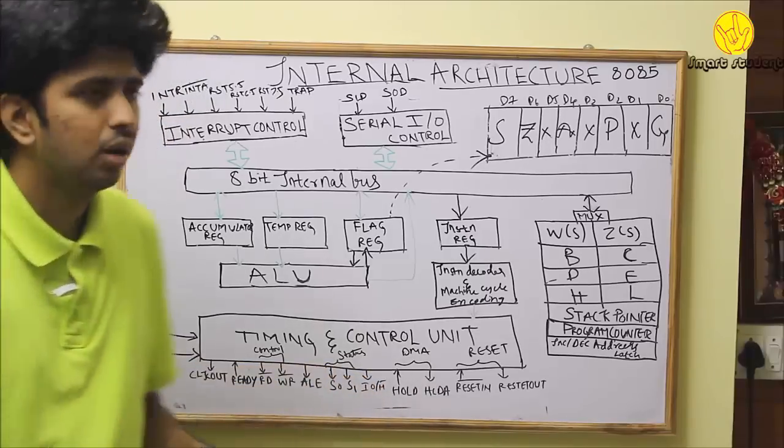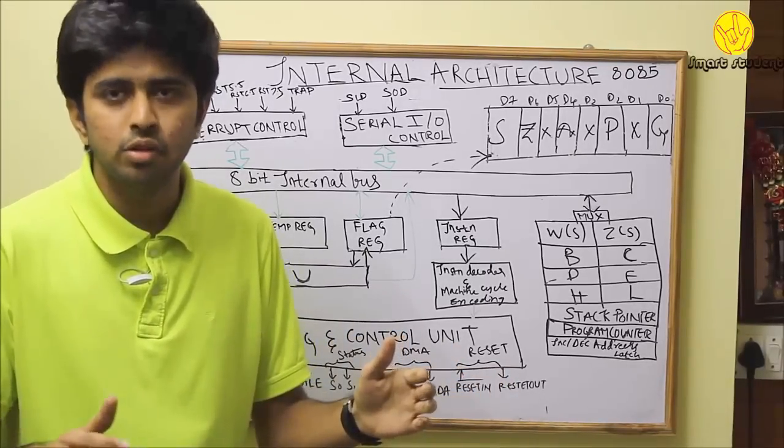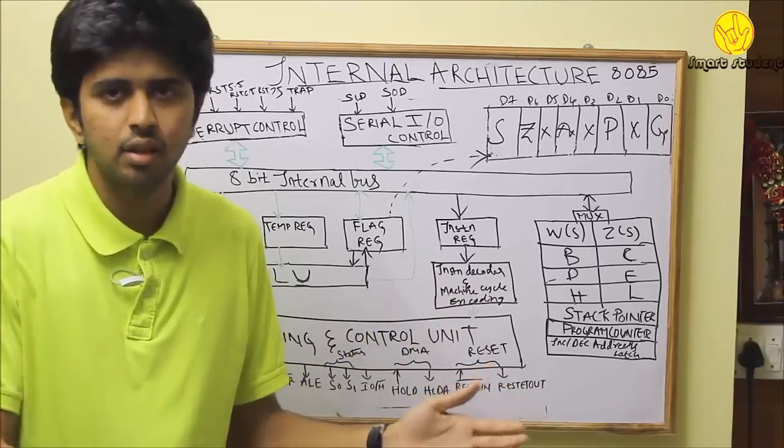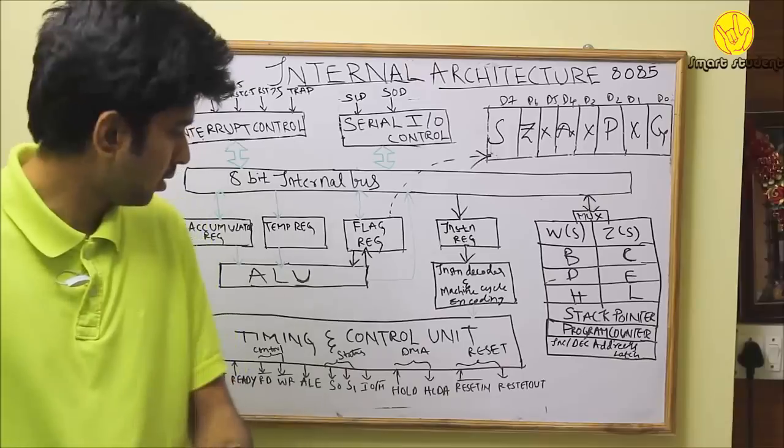IO and IO/M bar: when IO/M bar is set to 1, read and write operations through input output memory takes place. When IO/M bar is set to 0, read and write operation through memory devices takes place.